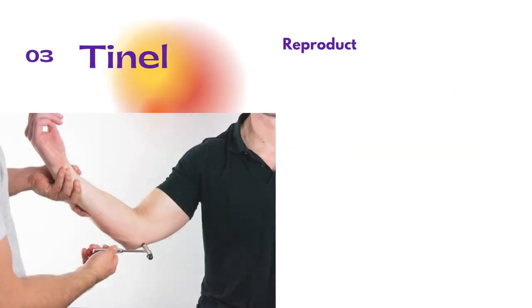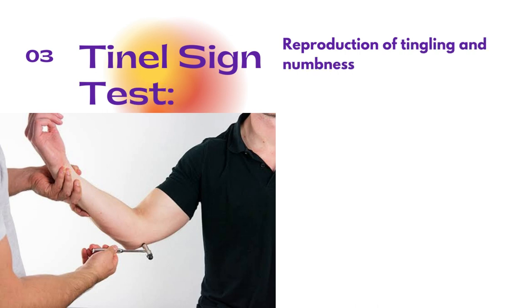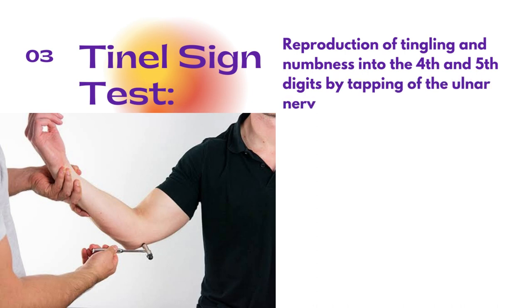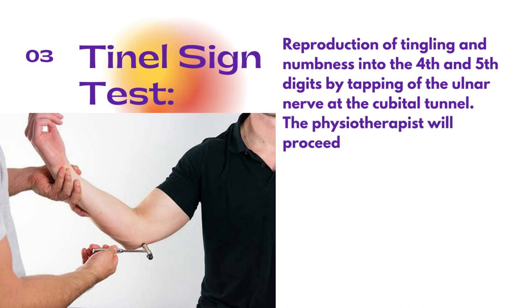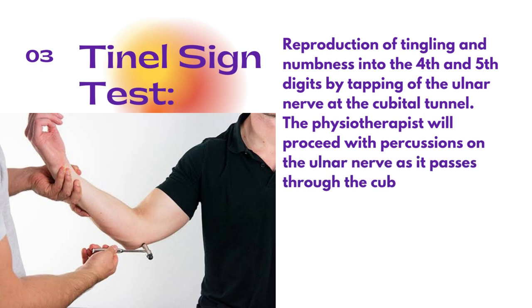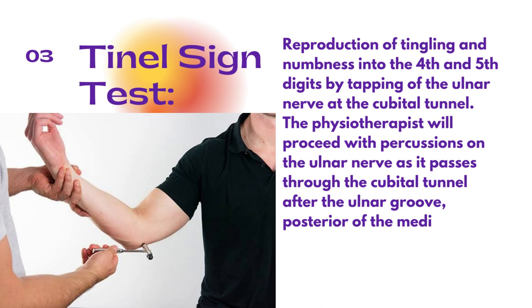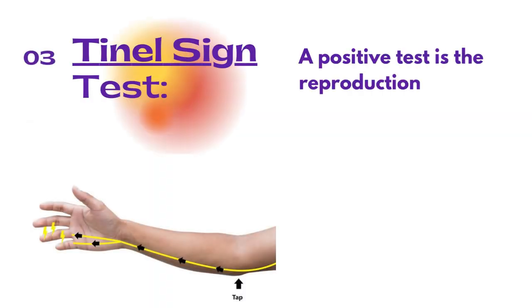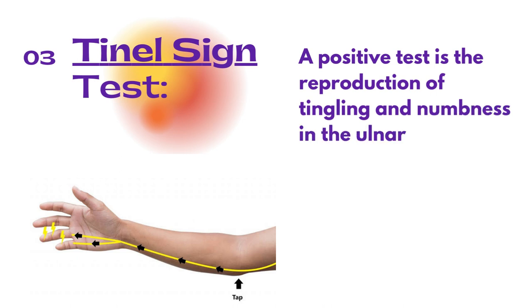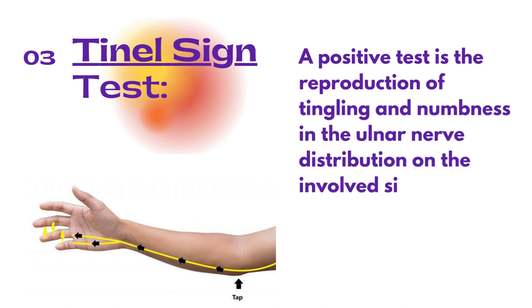After the pressure provocation test, there comes the tunnel sign test. The basic difference is that in the elbow flexion test there is reproduction of pain, while in the tunnel sign test there is reproduction of tingling and numbness in the fourth and fifth digits by tapping at the ulnar nerve at the cubital tunnel. The physiotherapist performs percussions on the ulnar nerve as it passes through the cubital tunnel, posterior to the medial epicondyle of the humerus. A positive test is reproduction of tingling and numbness in the ulnar nerve distribution of the involved side.